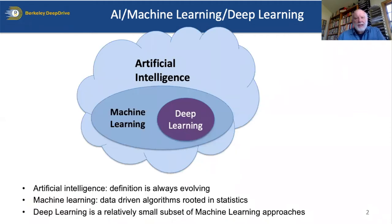You'll notice I said deep learning, and not more broadly artificial intelligence and machine learning—I will describe those in more detail later. The definition of artificial intelligence is always evolving, and machine learning, I think we can say, is generally a set of data-driven algorithms rooted in statistics. Deep learning is actually a relatively small subset of machine learning approaches.